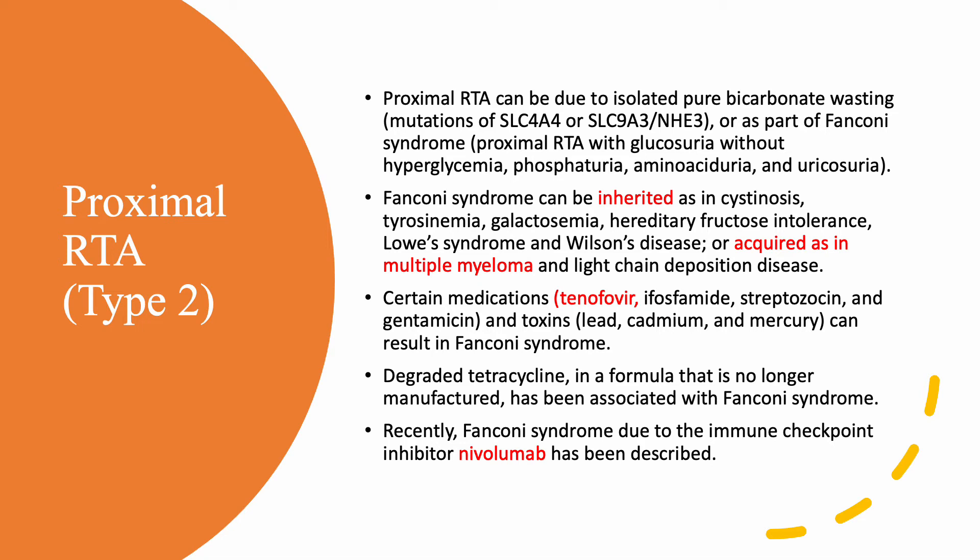Fanconi syndrome is very important. It can be inherited from rare disorders such as cystinosis, tyrosinemia, galactosemia, hereditary fructose intolerance, Lowe's syndrome, and Wilson's disease. Or — and this is more important, especially for the adult nephrologist — it can be acquired, as in multiple myeloma and light chain deposition disease. Some medications are also important causes: tenofovir, which is used for HIV, is really strongly associated with Fanconi syndrome — never forget tenofovir. Ifosfamide, streptozocin, and gentamicin can all cause Fanconi syndrome. Toxins such as lead, cadmium, and mercury can also result in Fanconi syndrome.